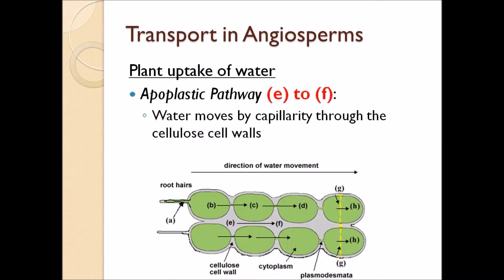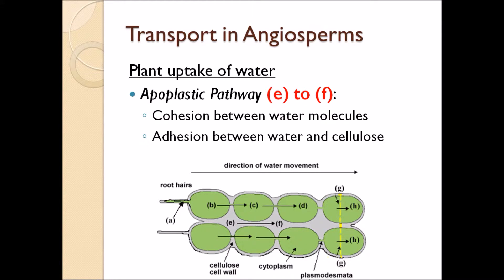If you think that cotton — what your shirt is made of — is mostly made of cellulose, then you understand that water can adhere to cellulose. It can have adhesion to it because cellulose is slightly polar, just like water. This means that water can actually be pulled through the cell walls without entering the plant. So E to F is water moving into the plant without ever actually entering a cytoplasm — that's called the apoplastic pathway. Both the symplastic and apoplastic pathways are driven by cohesion, the water pulling on the water behind it, with the source of that pull being water evaporating in the leaf. The apoplastic pathway also works because of adhesion between water and cellulose.